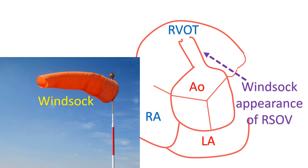Echocardiography and magnetic resonance imaging are two important investigations for RSOV. Transesophageal echocardiography may give more details than a transthoracic echocardiogram. Occasionally, a sinus of Valsalva aneurysm may be detected prior to rupture as well. The classical echocardiographic appearance in RSOV to RV is a windsock appearance of the aneurysm in the right ventricular outflow tract, which is better seen on transesophageal echocardiography.